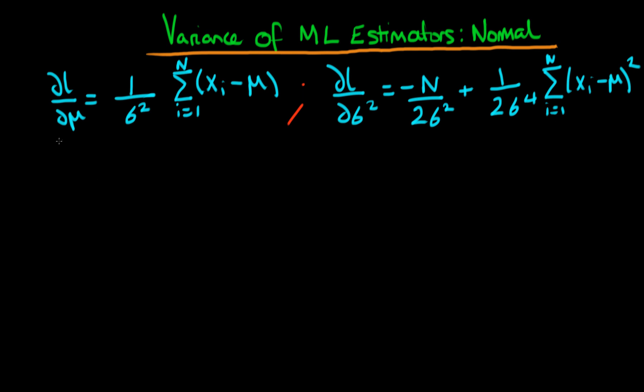So at the end of the last video we derived these two expressions for the derivative of the log likelihood with respect to the two parameters in question, mu and sigma squared. And what we're going to do in this video is we are looking to derive an expression for what I defined in the last video or the last few videos as the information matrix.